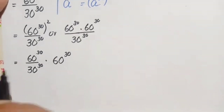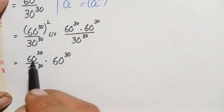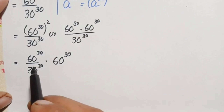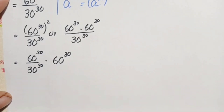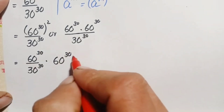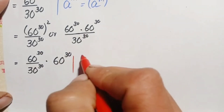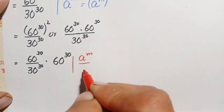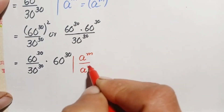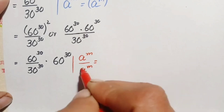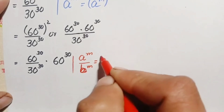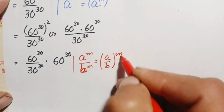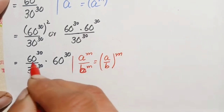Now, looking at this number — the numerator and denominator both have the same power. We will use the same-power exponential identity: a raised to power n divided by b raised to power n equals a divided by b, all raised to power n. Applying this identity to the first fraction, we take out the common power and divide the bases.